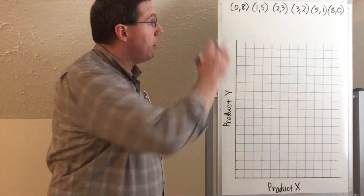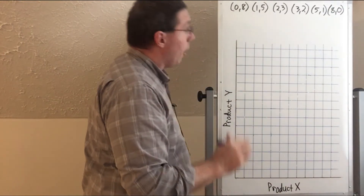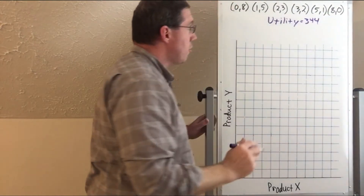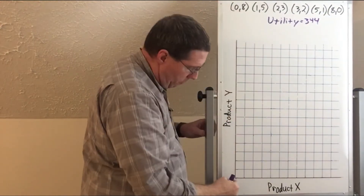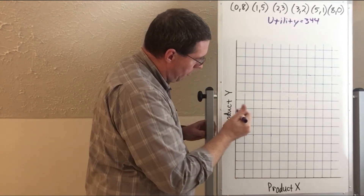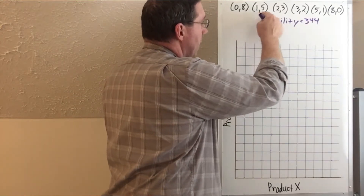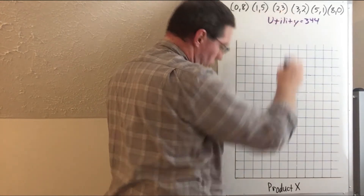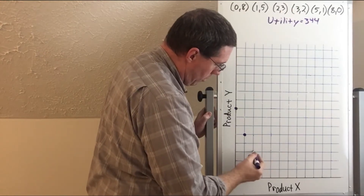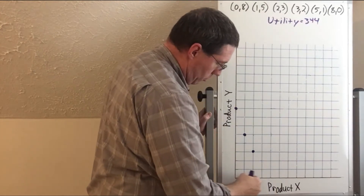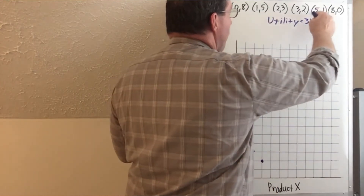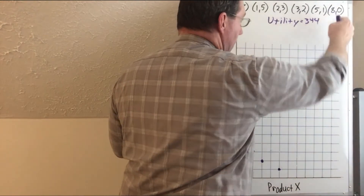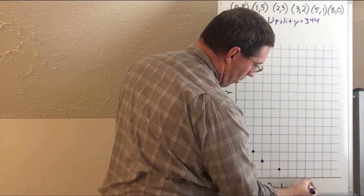Let's plot the six points we have — all of them result in a utility of 344. If we consume zero of X and eight of Y, that point goes here. One unit of X and five units of Y goes here. Two units of X and three units of Y goes here. Three of X and two of Y goes here. Five of X and one of Y goes here. And eight of X and zero of Y goes here.